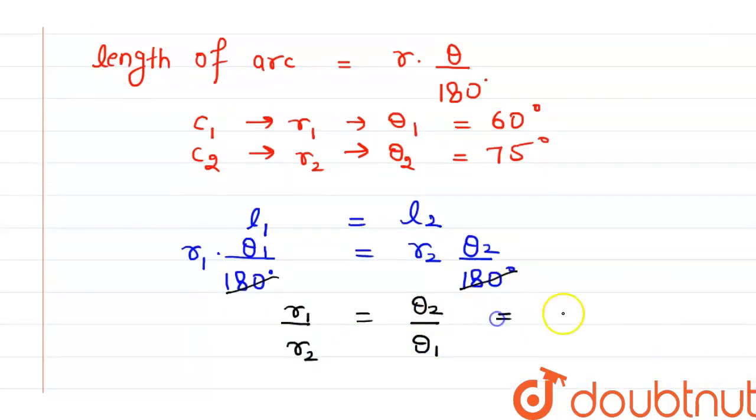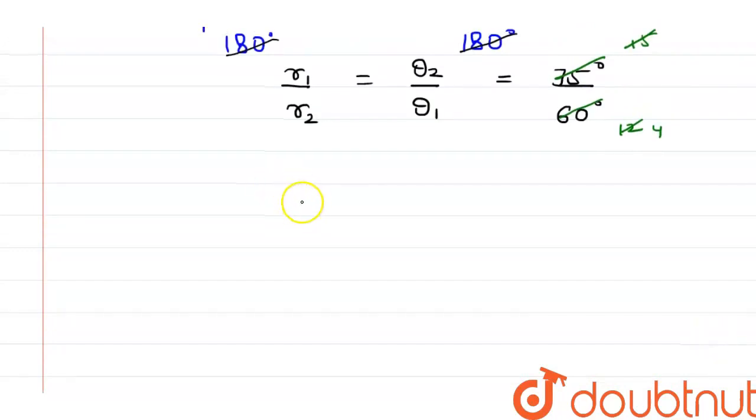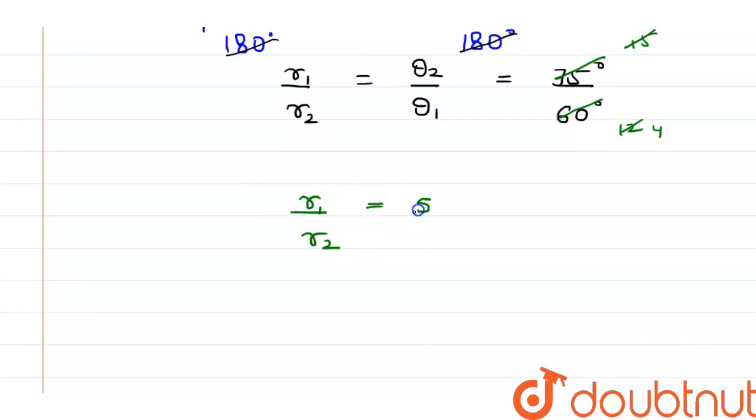We know that theta 2 is 75 degrees and theta 1 is 60 degrees. Then we will have it will become 12, 15, 5, and 4. So from here, what we have is R1 by R2 is 5 by 4.